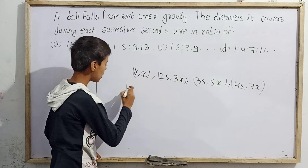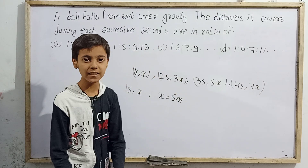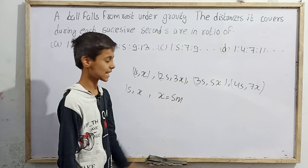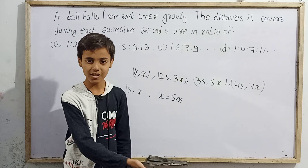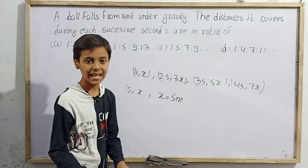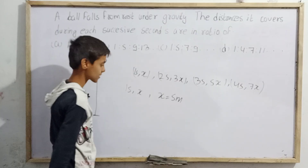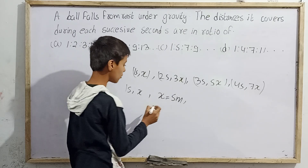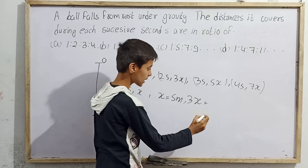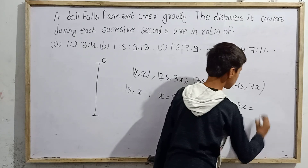In the first second x equals 5 meters, since s equals half a t squared equals half times 10 times 1 squared equals 5 meters. For the second second, 3x equals 15 meters. For the third second, 5x equals 25 meters. For the fourth second, 7x equals 35 meters.